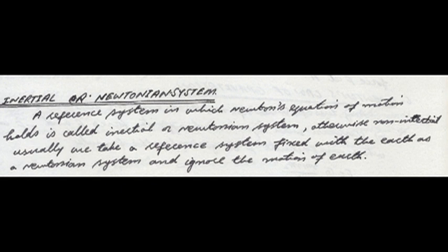Otherwise, it is called a non-inertial frame, or non-inertial frame of reference, or non-inertial system. Usually we take a reference frame or reference system fixed with the earth as a Newtonian system and ignore the motion of earth. Note: inertial and non-inertial frames or systems is also one of the fundamental principles of classical mechanics. Thanks.